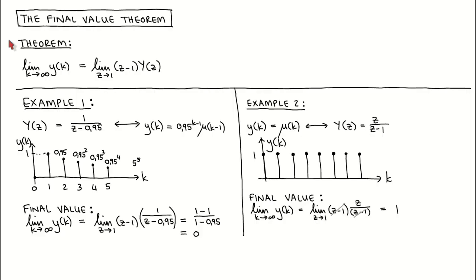The final value theorem states that the steady state value of a signal y, which is the limit of y of k as k tends to infinity, can be calculated as the limit as Z tends to 1 of Z minus 1 times the Z-transform of y. This theorem allows us to easily calculate the steady state value of a signal if we have its Z-transform.